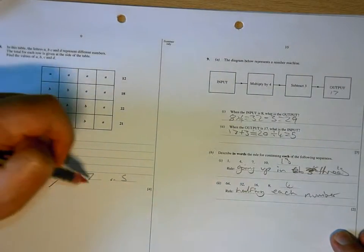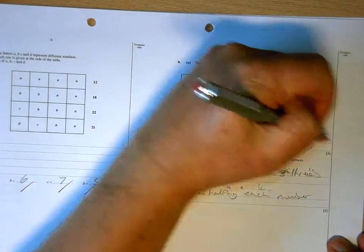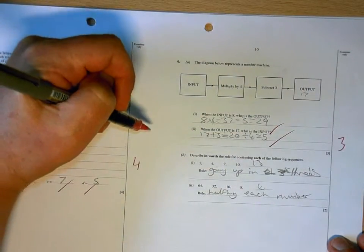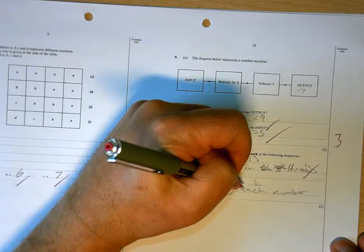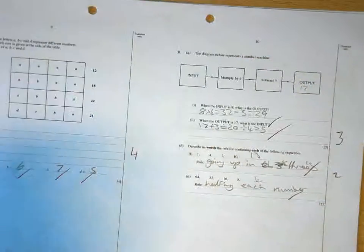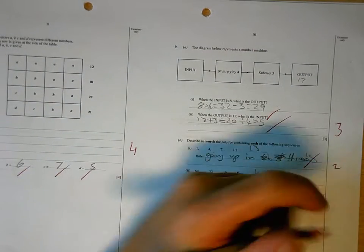Three, six, seven, five is correct. Well done. Twenty-nine and five are correct. Going up in threes. Well done, you've used the words. Halving each number is fine there. Total for the page, nine.